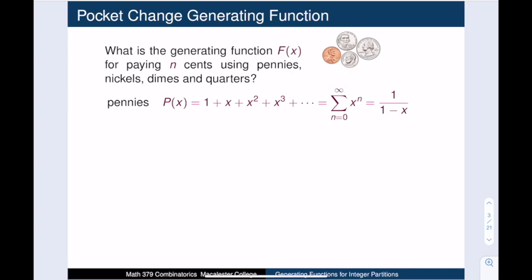Note that we can pay 0 cents with pennies because there is one way to do nothing. Therefore, the generating function p for paying with pennies is 1 + x + x² + x³ + ... This is just the geometric series, which equals 1/(1 − x).